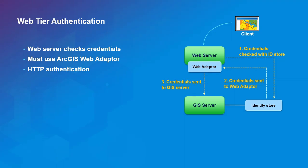Web tier authentication works slightly differently. The client makes a request to the web server where the WebAdapter is required. The WebAdapter, via the web server's libraries, calls the same identity store — Active Directory or LDAP — and validates the user. If validated, the WebAdapter passes the request to the GIS server, which trusts the WebAdapter and doesn't re-check. This enables more advanced authentication methods like single sign-on with integrated Windows authentication, smart cards, and PKI certificates.